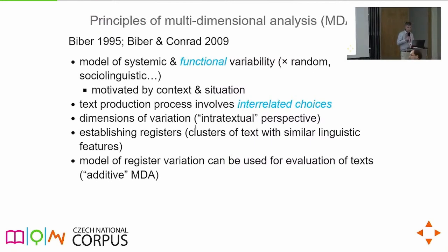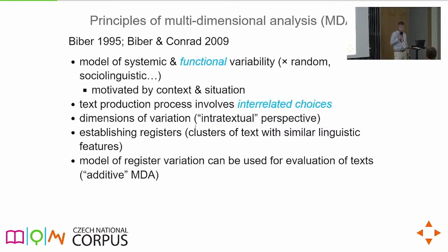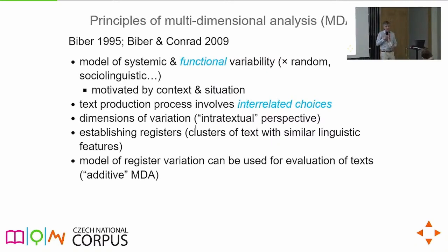The output of multidimensional analysis are dimensions of variation, representing what we call an intertextual perspective — not about what texts look like from the outside, like a novel being a book, but stemming from the linguistic means used in texts. Another output is that we can establish registers, which are clusters of texts — these will be really important in this talk. Importantly, once you have a model for a language, you can apply it to any text to find out its position on the dimensions and determine its register — especially useful for data without any metadata.